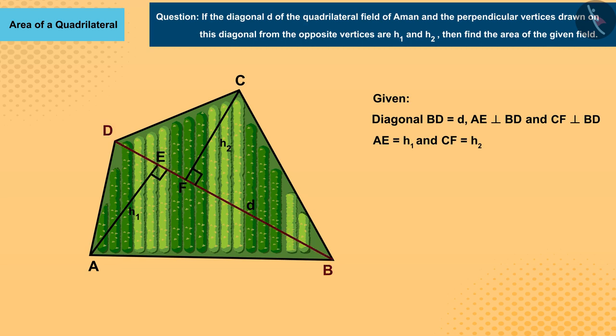We can see that the diagonal BD divides the quadrilateral into two triangles ABD and DCB. Now the question is, after knowing this, how can we find the area of a quadrilateral?